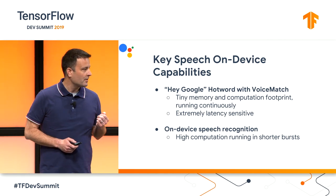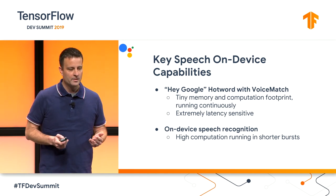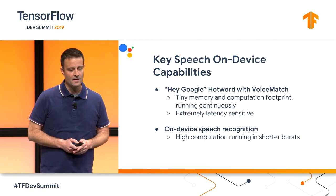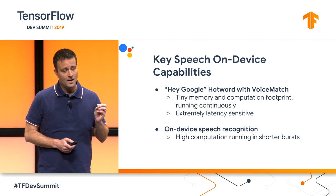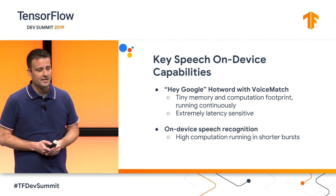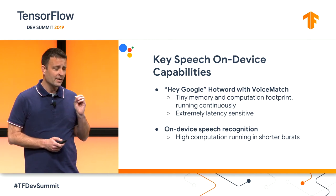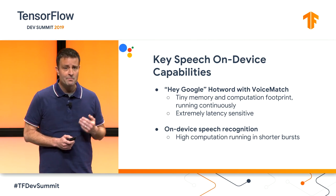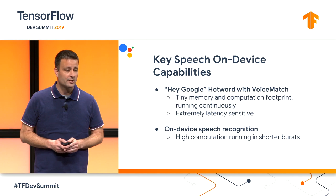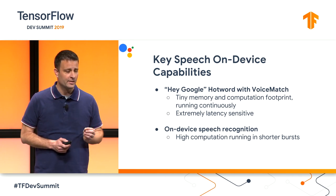For Assistant, we have a couple of key speech on-device capabilities. The first is the hot word — you need to be able to say 'Hey Google' to trigger your device. We need to both detect that hot word and recognize that it's your voice, and not somebody else trying to activate your phone. Because this is running all the time, we have to have a tiny memory and computation footprint running continuously, and we're extremely latency sensitive — as soon as you say the hot word, we need to immediately trigger.